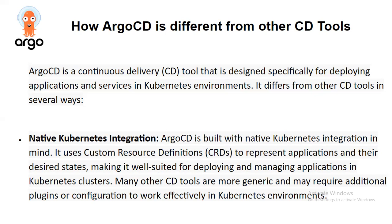The first differentiator is native Kubernetes integration. Argo CD is built with native Kubernetes integration in mind. It uses Custom Resource Definitions (CRDs) to represent applications and their desired states, making it well-suited for deploying and managing applications in Kubernetes clusters. Many other CD tools are more generic and may require additional plugins or configuration to work efficiently in a Kubernetes environment.